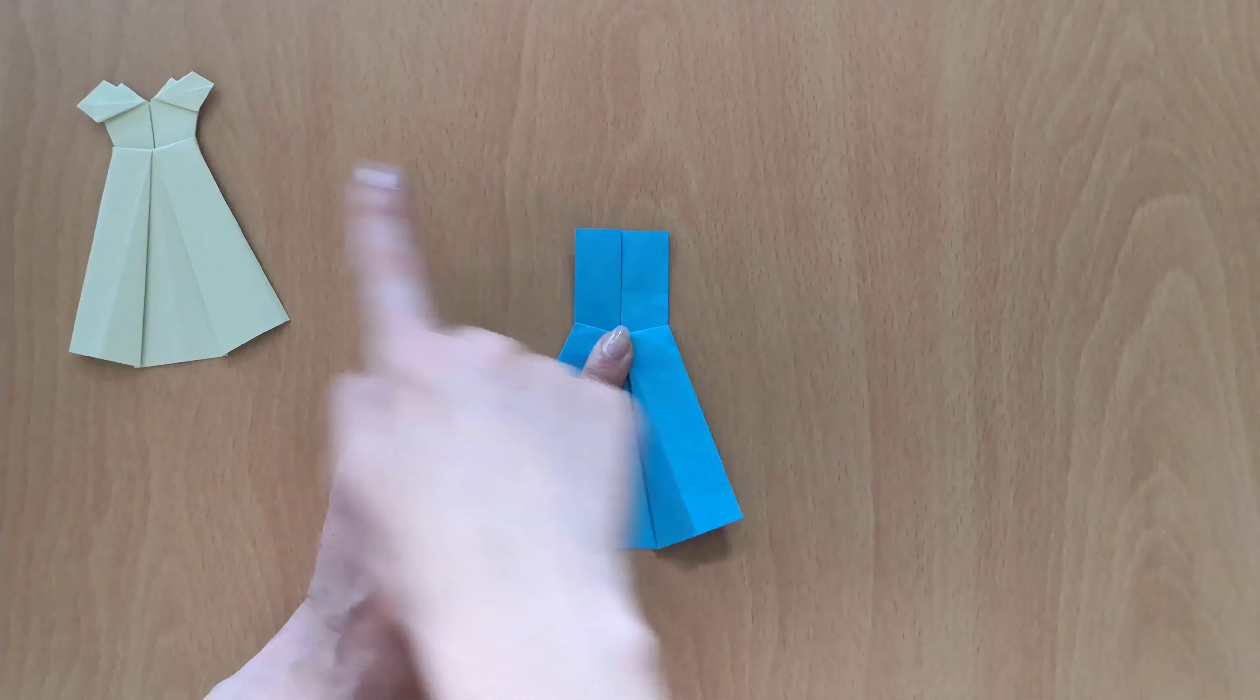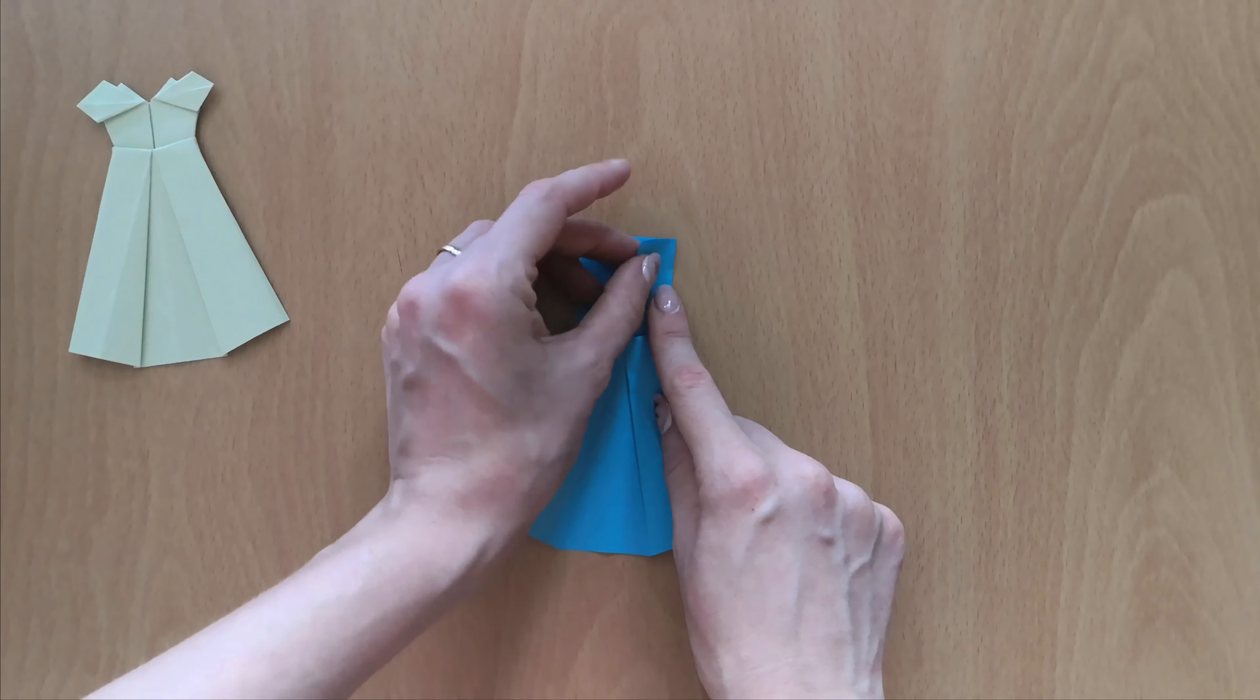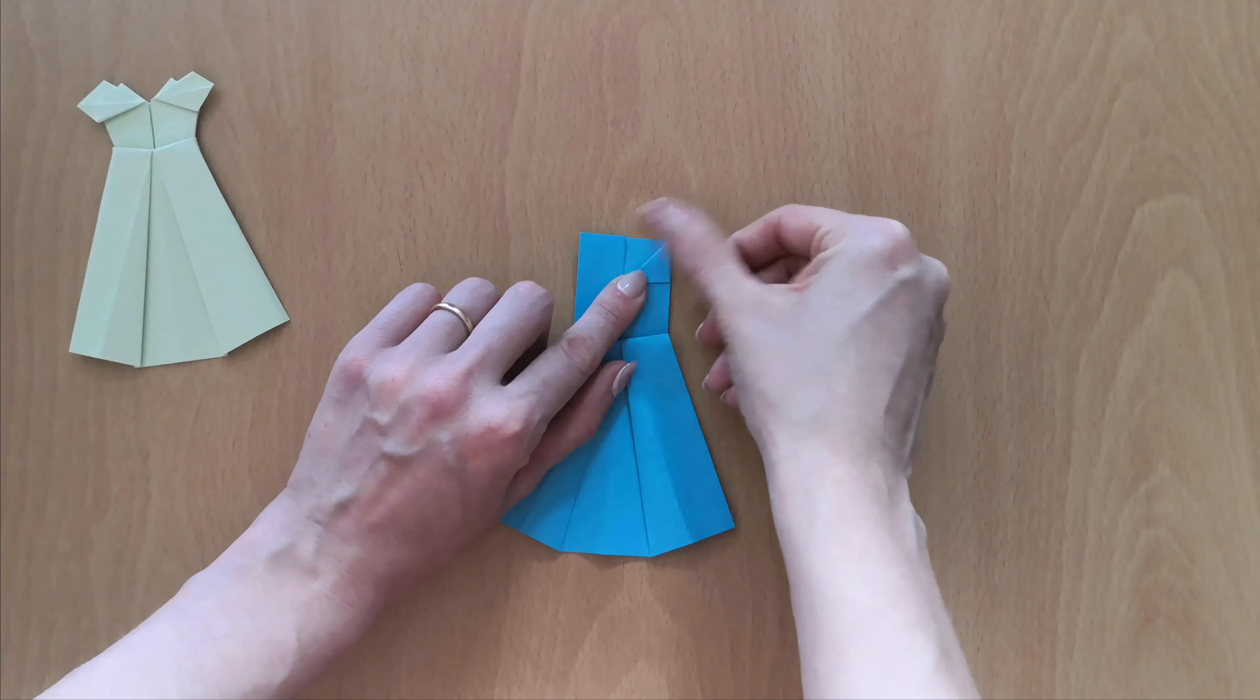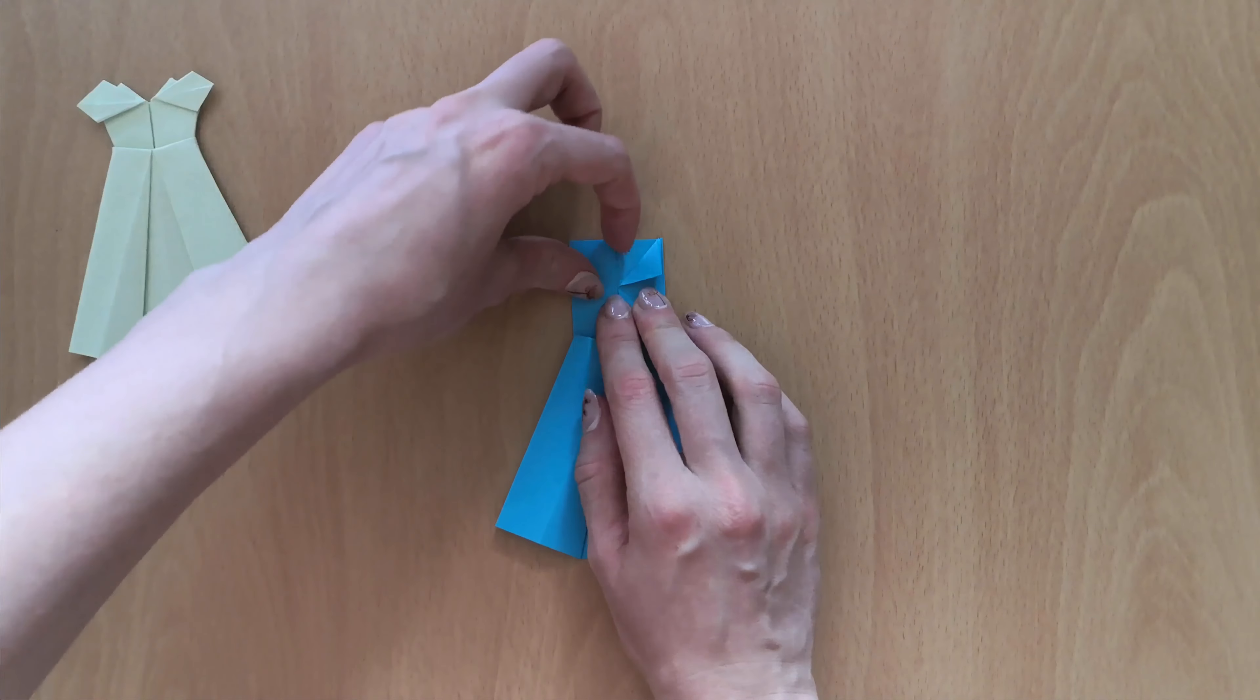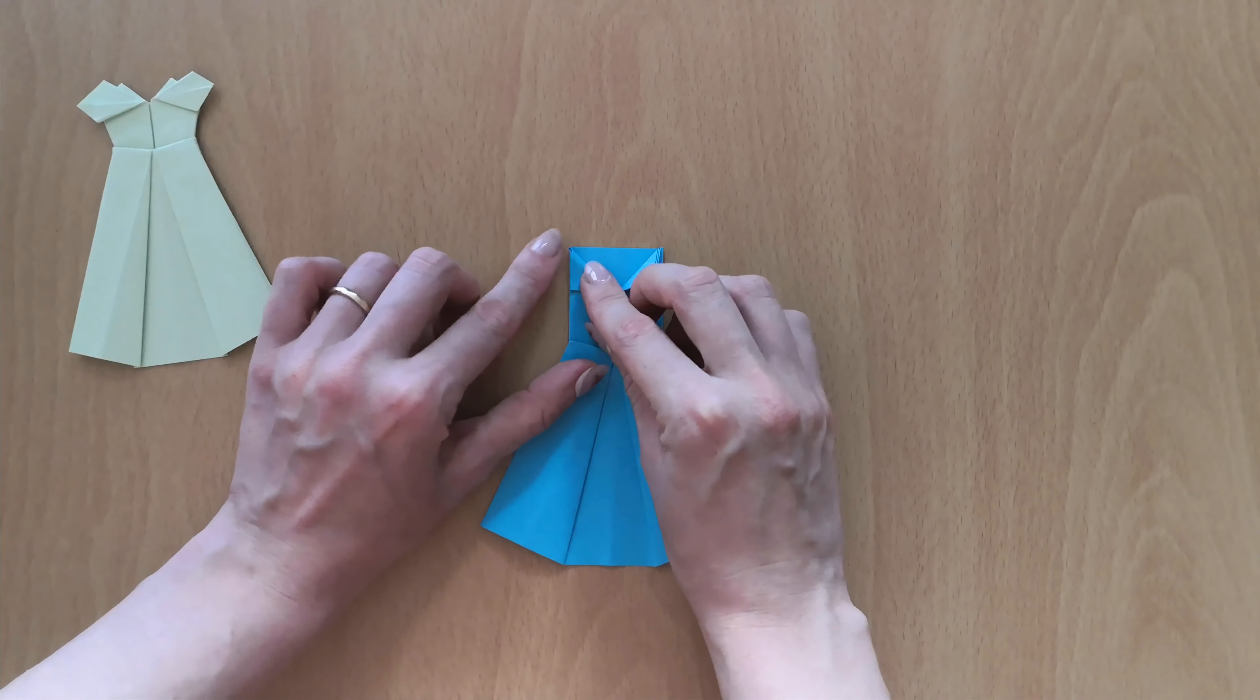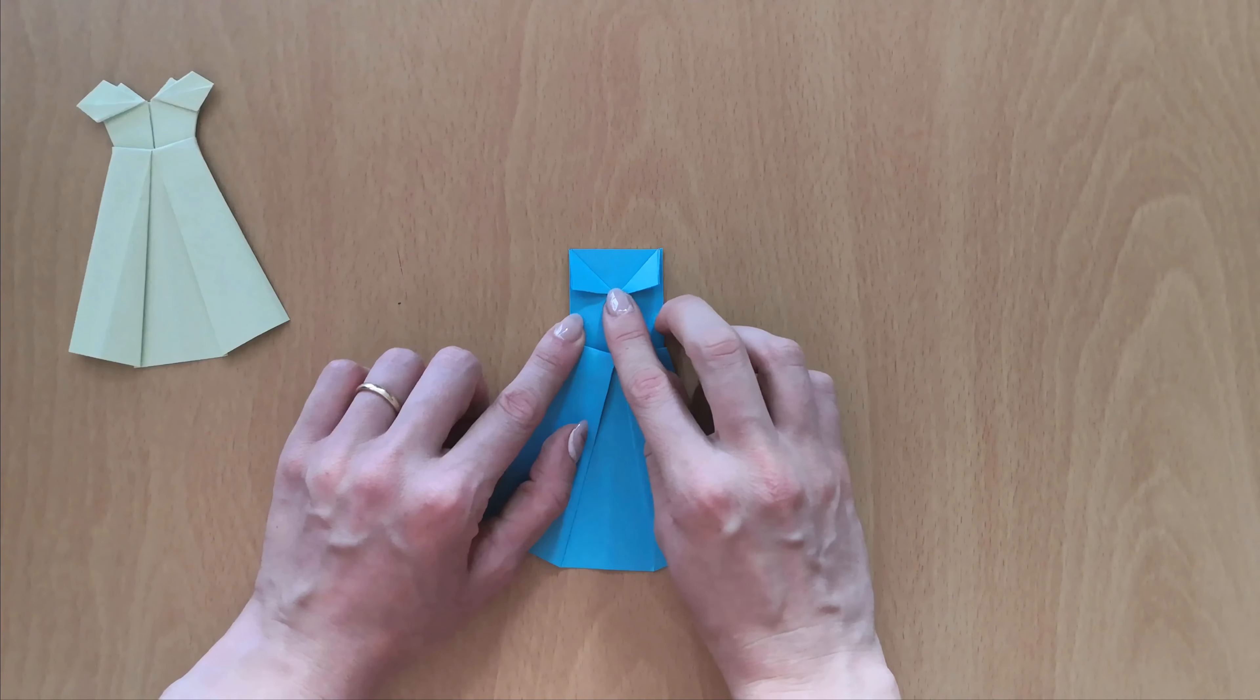And now we'll start by folding the top of the dress. So for this, you will fold the upper layer. Bring this crease of the paper to this line right here. So align the upper line with this outside line and press it down. And the same on this side. So just bring the corner downwards, align it with the outside line, and press it down.